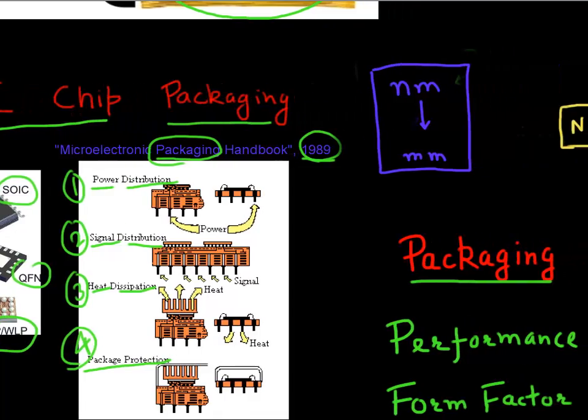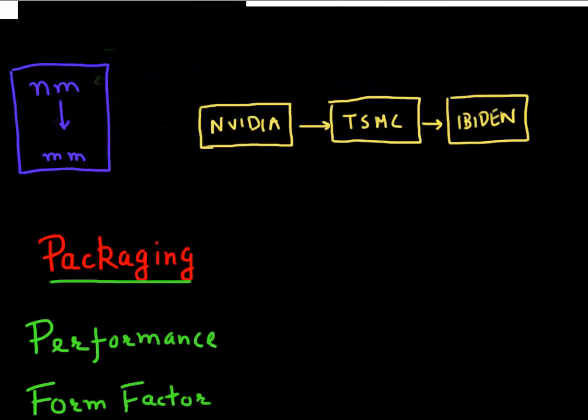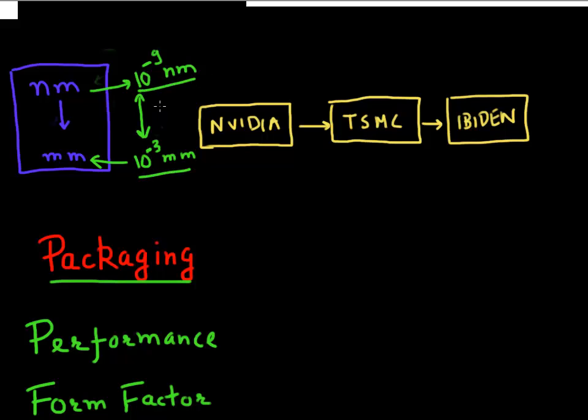So another way to define packaging would be that it's a means of connecting features on your transistors, which are on the order of full dimensions in the order of a few nanometers, to features on your package, which are on the order of dimensions of a few millimeters. So it's a way to bridge these dimensions from a nanometer scale to a millimeter scale, over a six order change in magnitude.